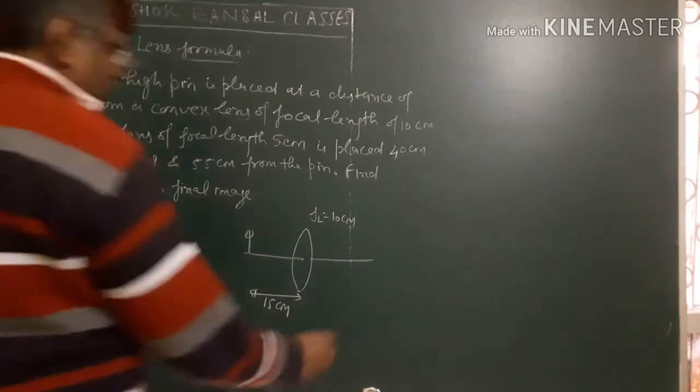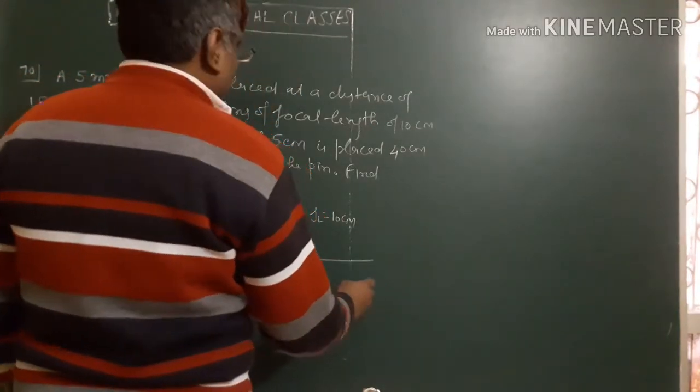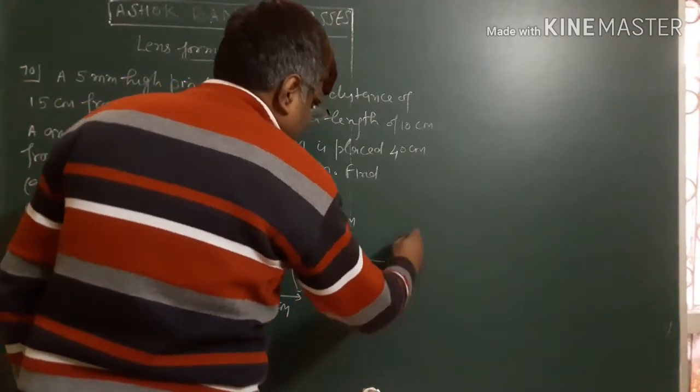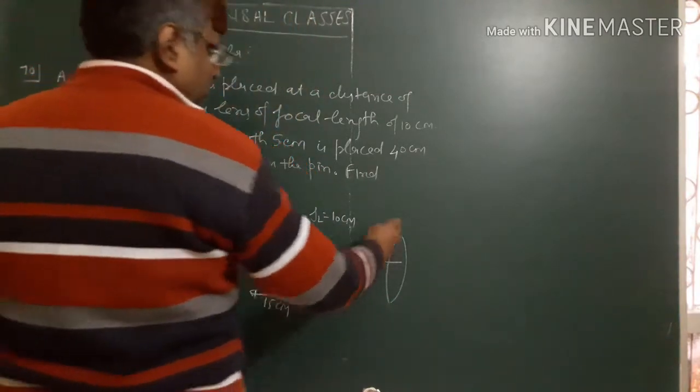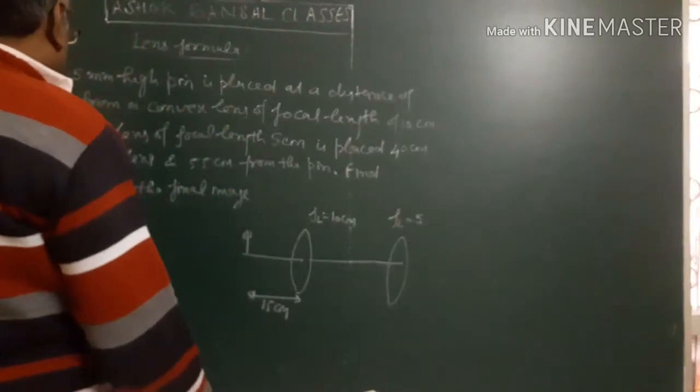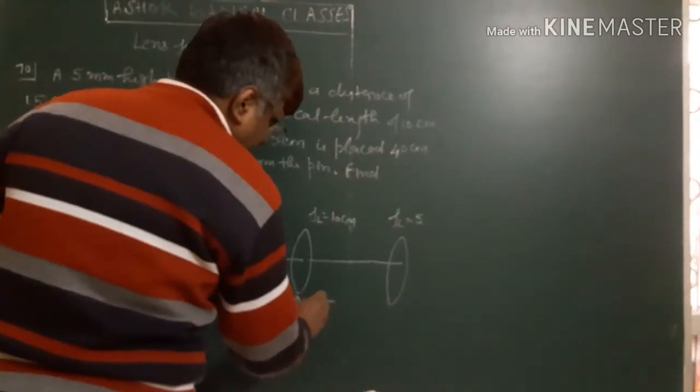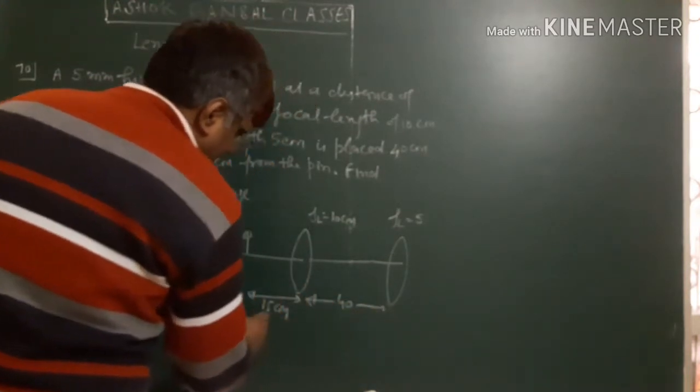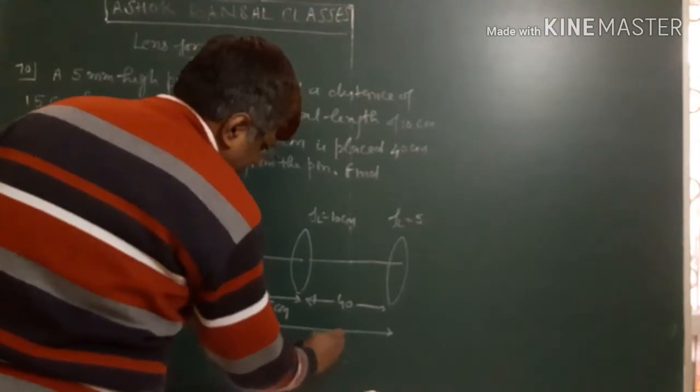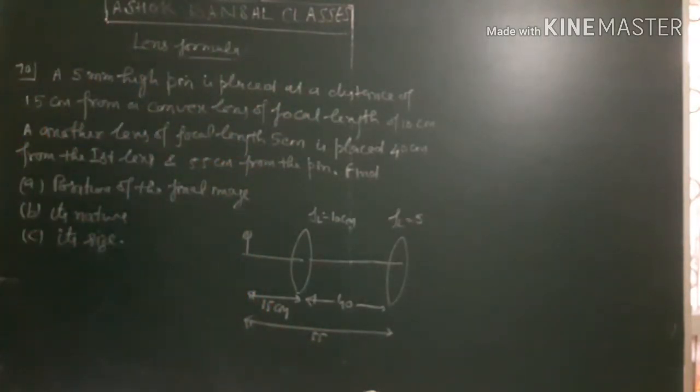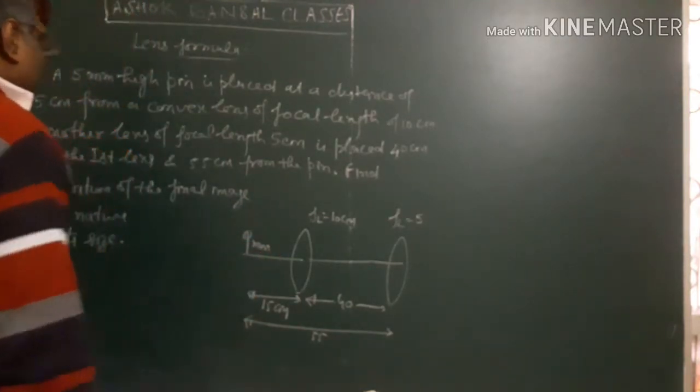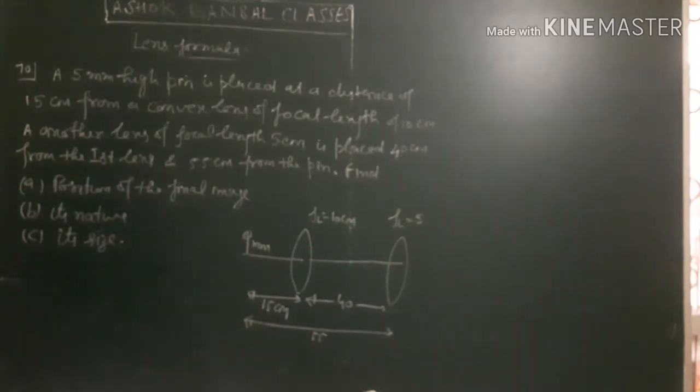Another lens of focal length 5cm is placed at a distance of 40cm from the first lens and 15cm from the pin. Find the position of the final image, its nature and its size.